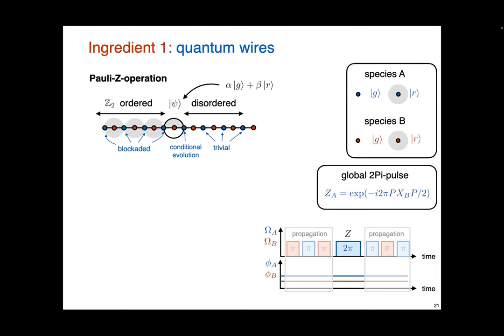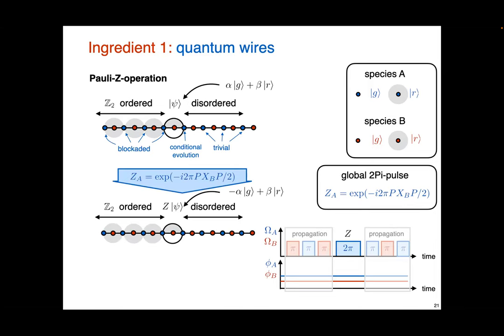If the interface is in the ground state, the wave function picks up a sign of minus one; if it's in the Rydberg state, it doesn't pick up a sign. Therefore, making a global two-pi pulse on the atoms where the interface is located is equivalent to making a Z gate on the interface qubit. But of course Z operations alone are not enough — what we really want is arbitrary single-qubit rotations.